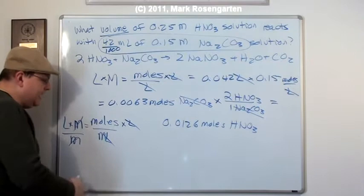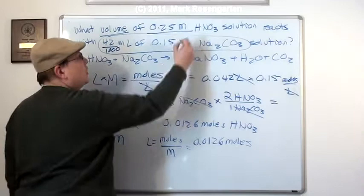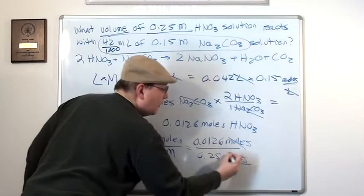Okay, so we know how many moles of HNO3 there are. We know the molarity of the HNO3. And the reason this works is, again, molarity is just an abbreviation for moles per liter. So that moles will cancel and leave us with liters when we're done. So 0.0504 liters.